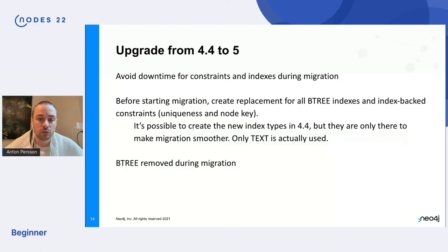So as a preparation step, before you start the migration, you need to replace all of your Btree indexes with those new types. And note that it's possible to create those new index types in four four. But they are only there to make the migration smoother. They will not be used actually by Cypher in four four, text, the text type being the exception there, which is actually used.